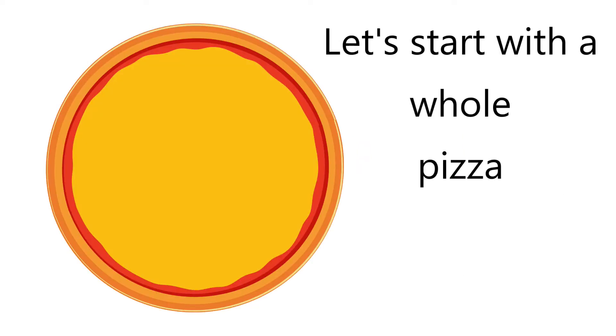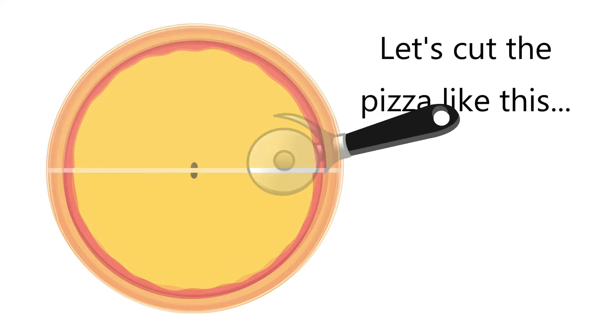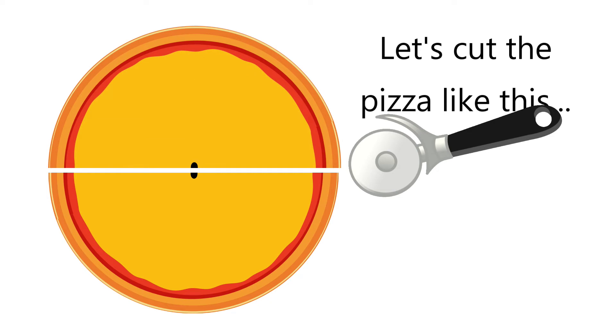Let's start with one whole pizza. We call it one whole, or one. We can write it as 1 or 1 over 1. Now let's cut this one whole pizza like this. We have cut this whole pizza into two equal parts. Each part is called a half.